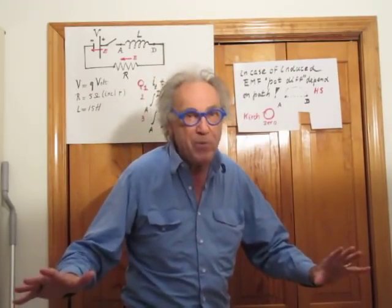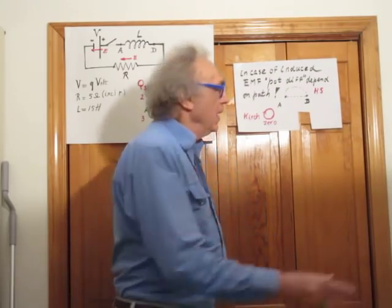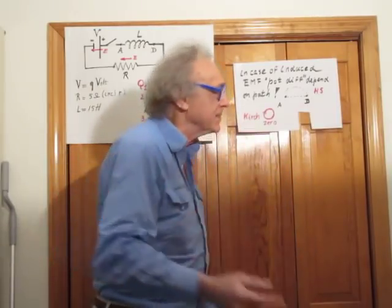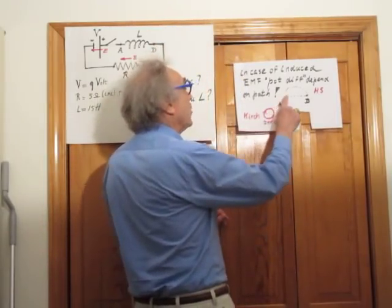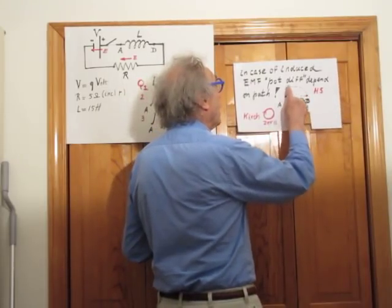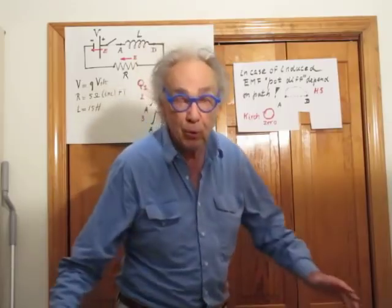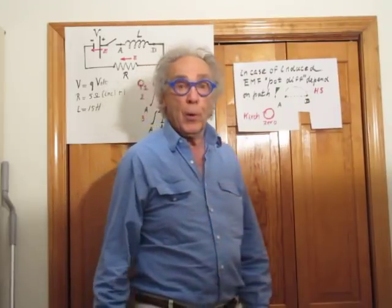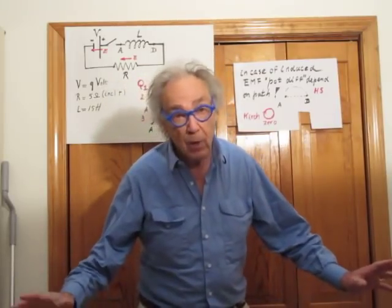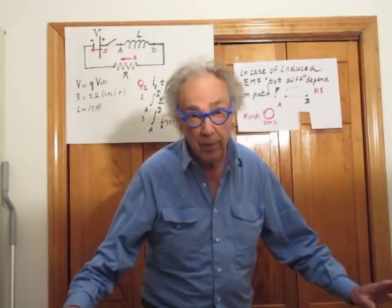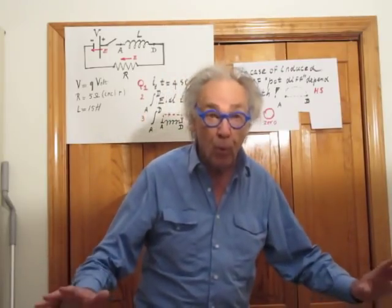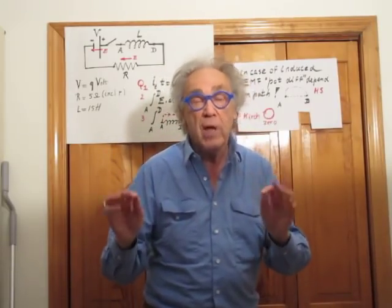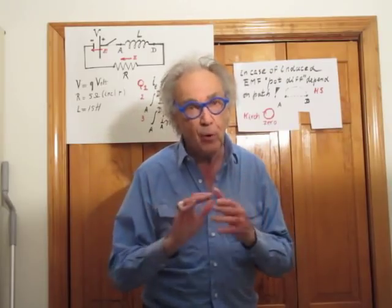Many people, even some with a background in physics, are still pre-programmed from high school thinking and believe that whether you go from here to here through the wire or outside, you should measure the same value. But that is not true. Kirchhoff's Loop Rule does not apply here — you must apply Faraday's law. If Kirchhoff's Loop Rule did apply, the potential difference between two points would be uniquely determined, independent of path.